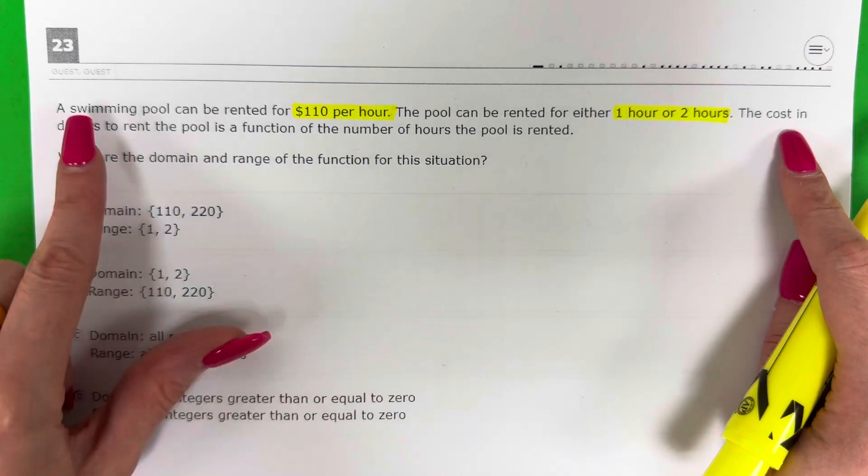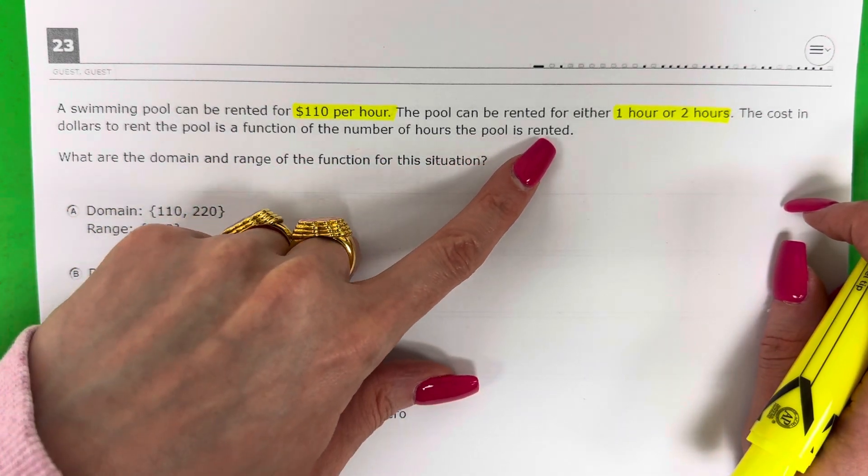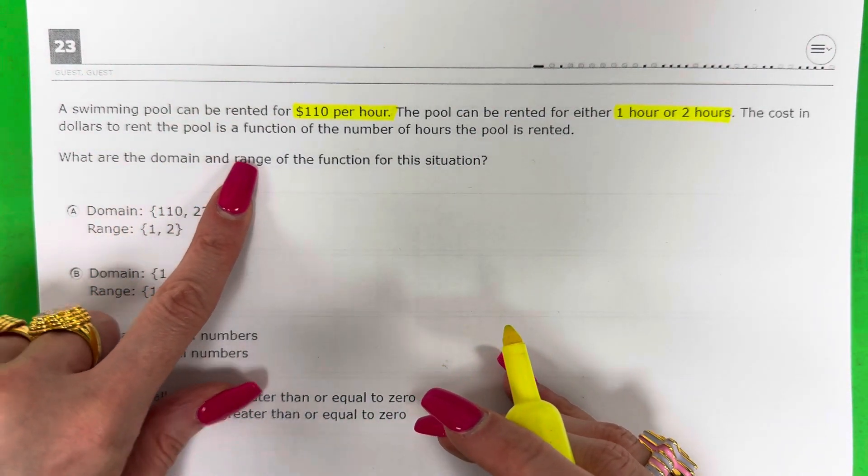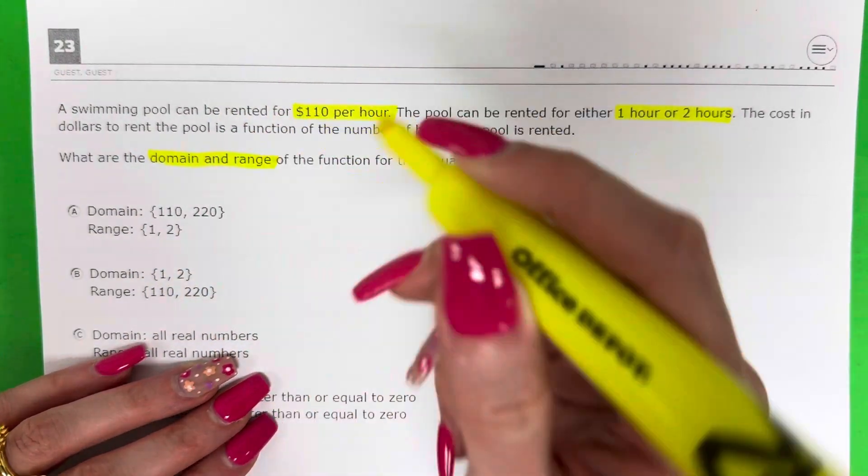The cost in dollars to rent the pool is a function of the number of hours the pool is rented. What are the domain and range of the function for the situation? So I need domain and range.